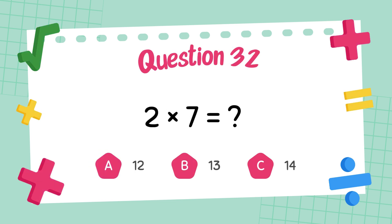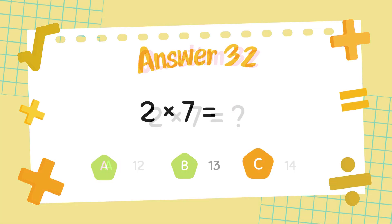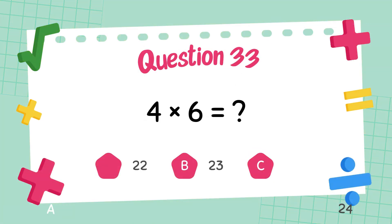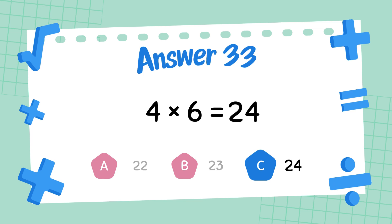What is 2 times 7? The answer is 14. What is 4 times 6? The answer is 24.